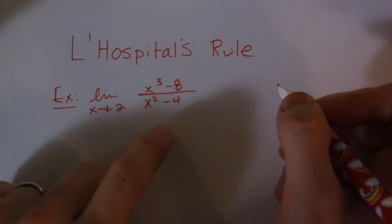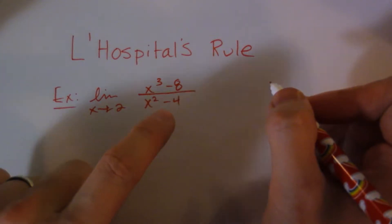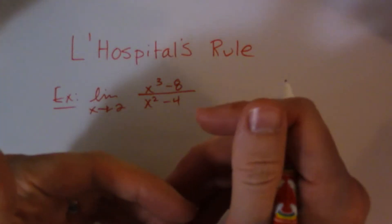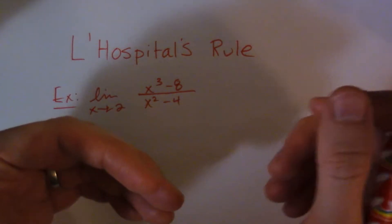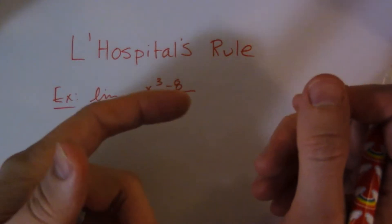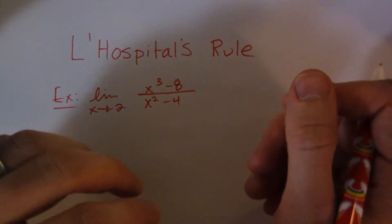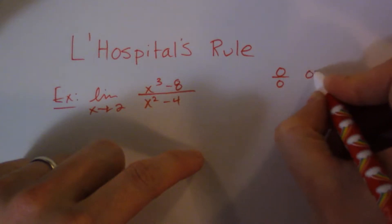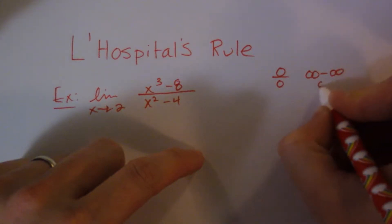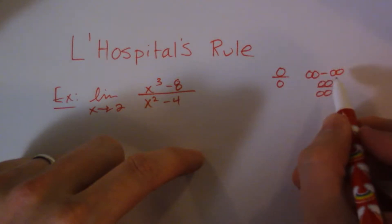The first thing about L'Hospital's Rule is we use it when we have an indeterminate form, so the majority of rational functions you're going to see are going to be 0 over 0. Sometimes you can have infinity minus infinity, or infinity over infinity. Those are the ones that occur most often, so infinity minus infinity, 0 over 0, or infinity over infinity.